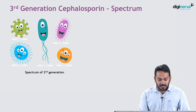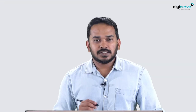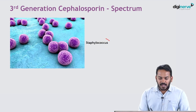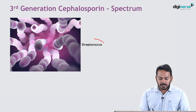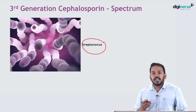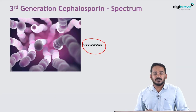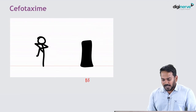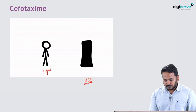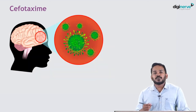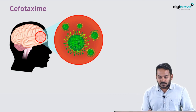Third generation cephalosporins have activity against organisms inhibited by second generation cephalosporins. In addition, they also have activity against Serratia, Neisseria, and they have good activity against Staphylococcus and Streptococcus. The first agent to discuss is cefotaxime, which crosses the blood-brain barrier and is used for treatment of meningitis produced by organisms susceptible to cephalosporins.